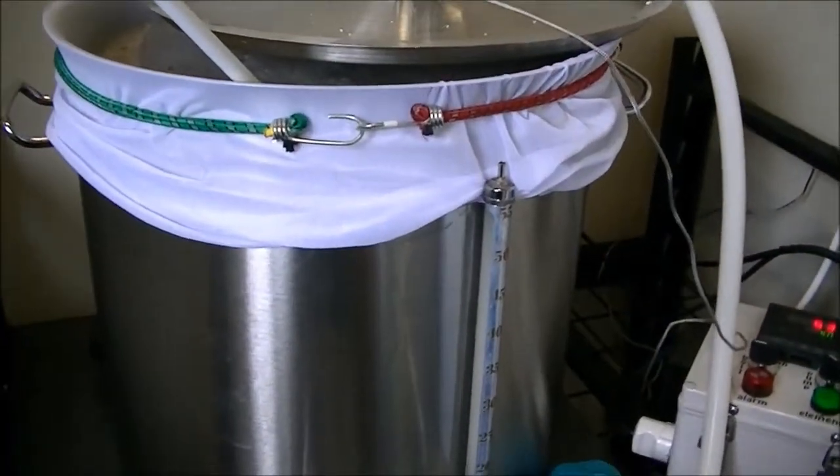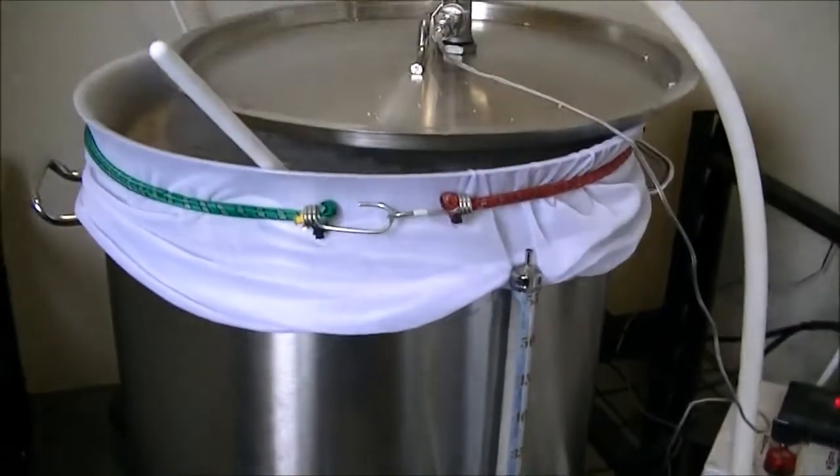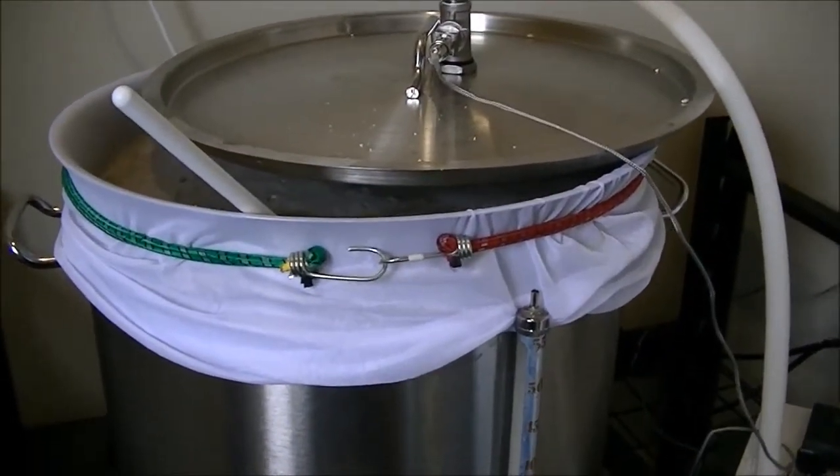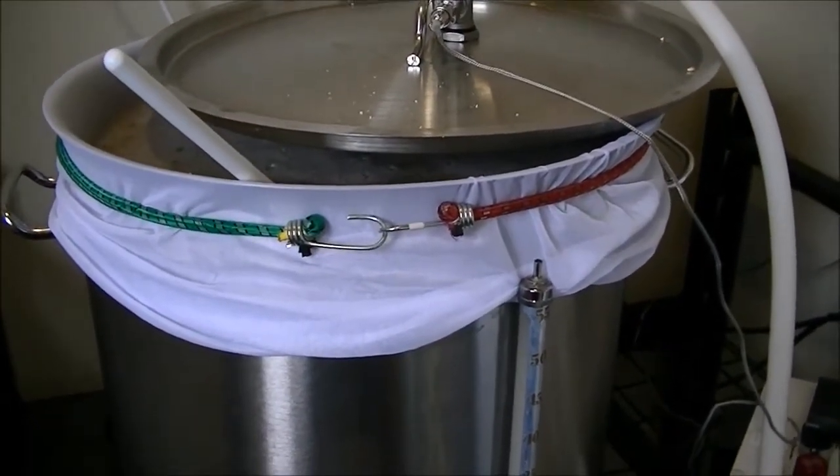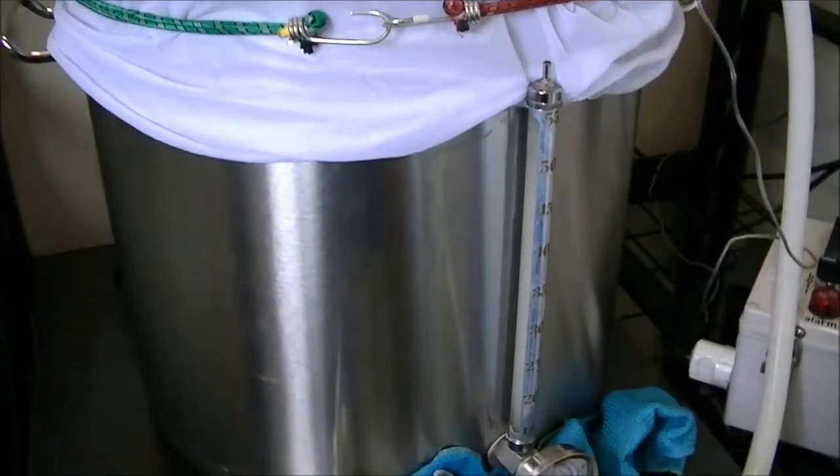So I've worked out that next time if I do a double batch, I'm going to mash in with about 45 liters of water and then have 10 liters for sparging the bag.